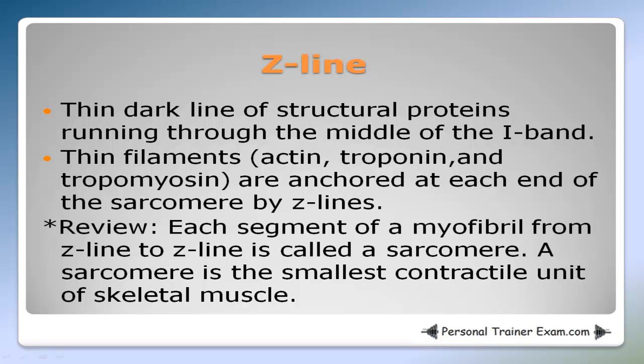The Z line is the thin dark line of structural proteins running through the middle of the I band. The thin filaments — actin, troponin, and tropomyosin — are anchored at each end of the sarcomere by Z lines. Each segment of a myofibril from Z line to Z line is called a sarcomere, and a sarcomere is the smallest contractile unit of skeletal muscle.